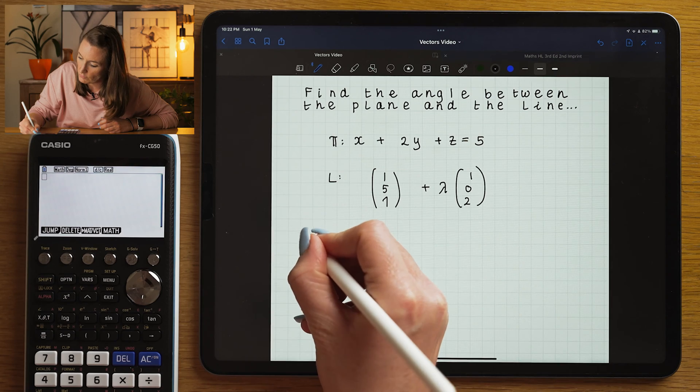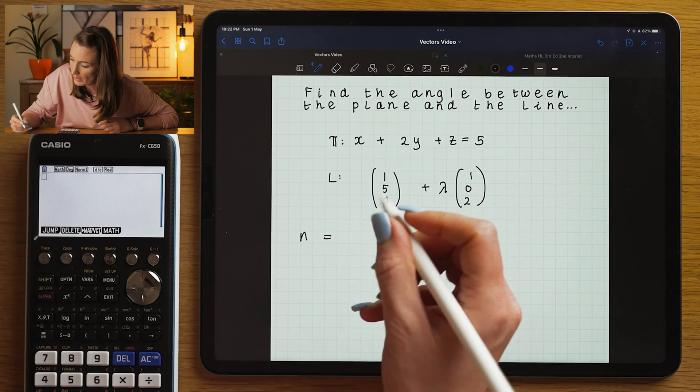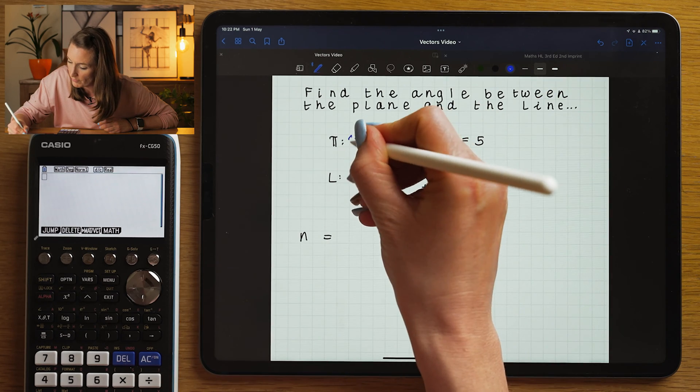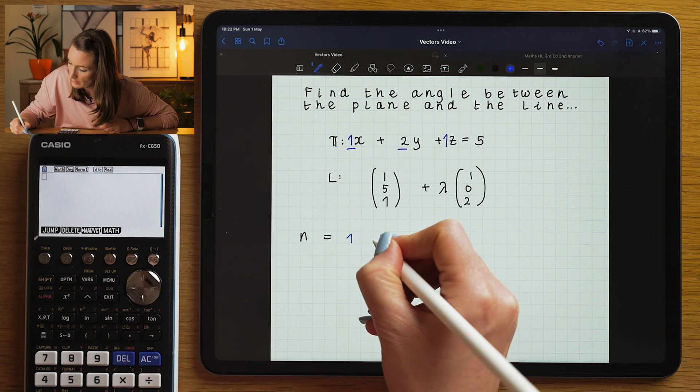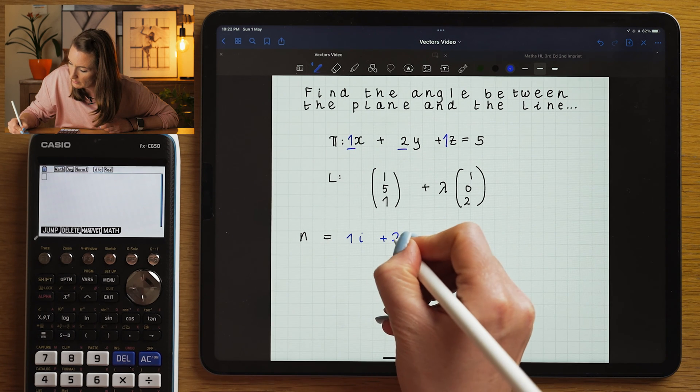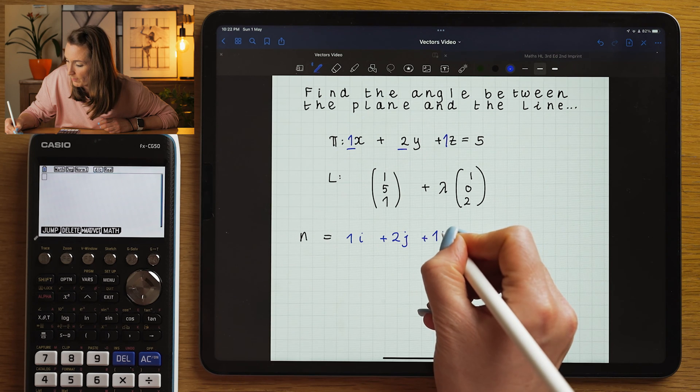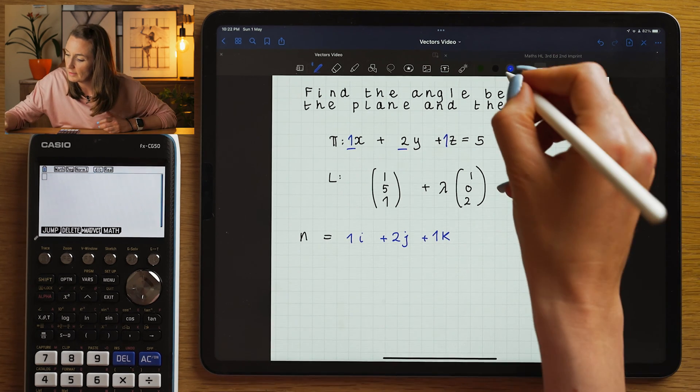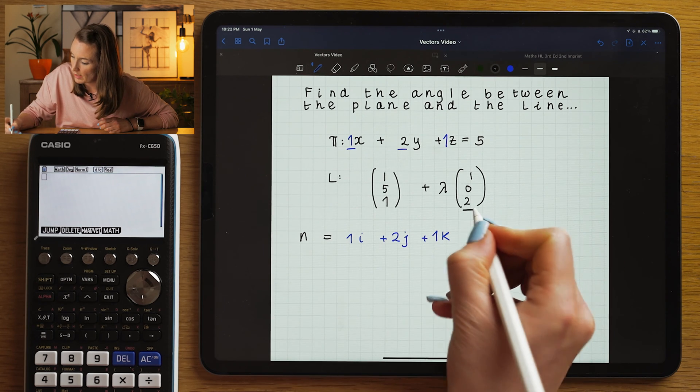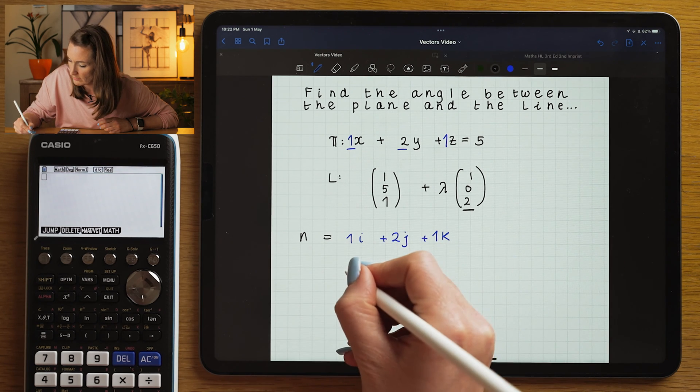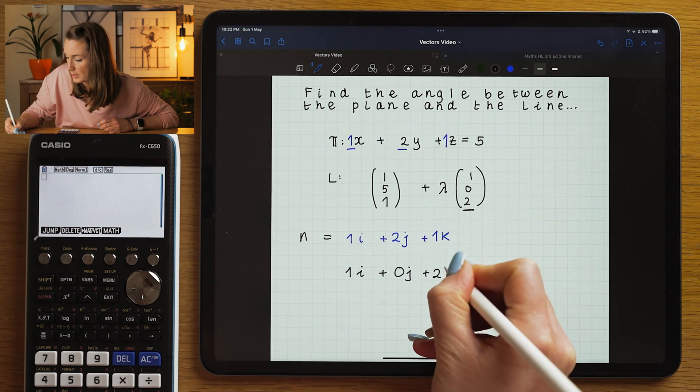So let's have a look at a practical example. What you're going to need to know first is the normal to the plane. So I'm going to look at the coefficients of the plane, which is going to be 1, 2, and 1. That helps me to know the normal to that plane is. And I'm going to take the direction vector from the line, which is the other vector I'm going to be working with would be 1i plus 0j plus 2k.